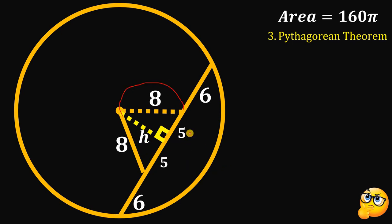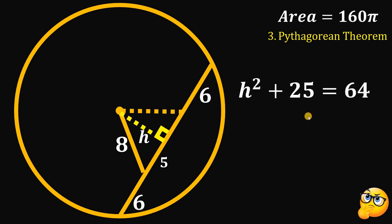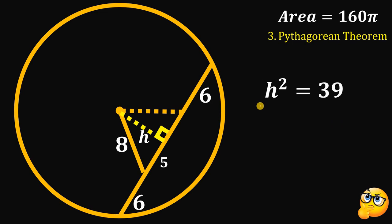Given this right triangle, we use the Pythagorean Theorem: H² + 5² = 8². So H² + 25 = 64, which gives H² = 64 − 25 = 39. We don't need the value of H itself — just H² = 39, so let's set that aside.